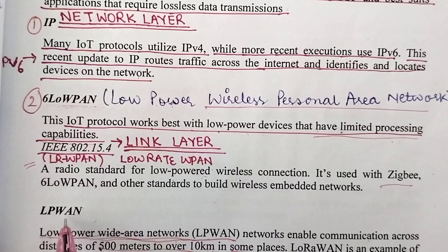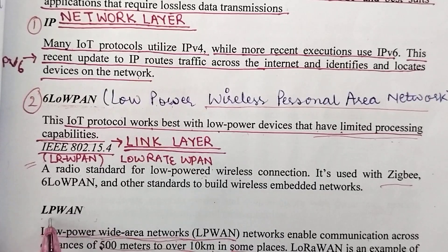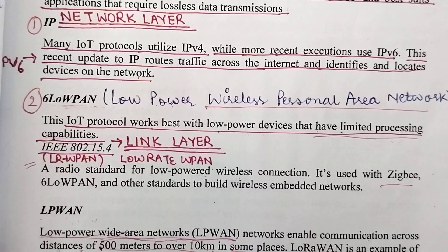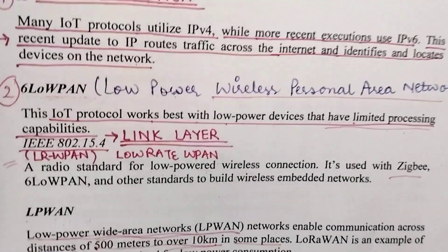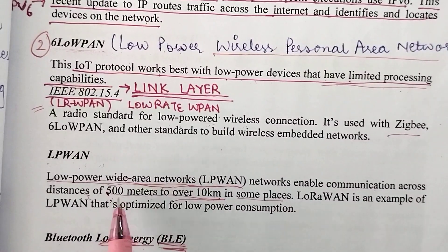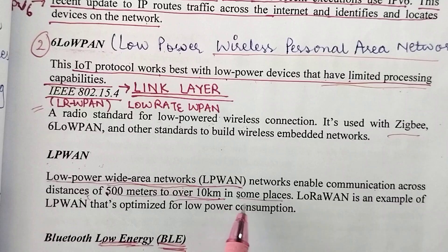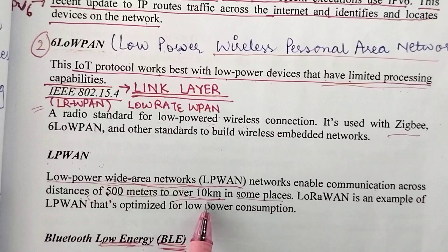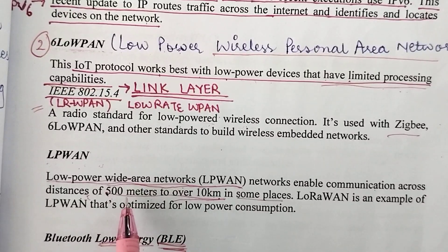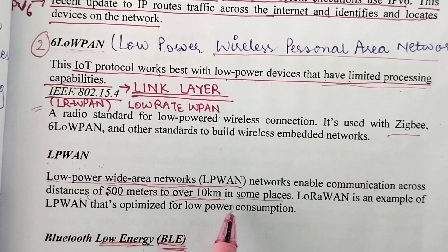The first one is LPWAN, which stands for Low Power Wide Area Networks. This standard basically enables communication across distances of 500 meters to over 10 kilometers in some places. So basically, for low power wide area networks, the range is usually between 500 meters to over 10 kilometers.